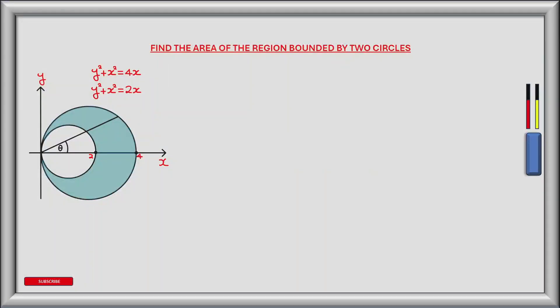In this exercise we have a region bounded by two circles shaded in blue, and we're going to find the area of the region using polar coordinates and double integrals. The outer circle has equation y squared plus x squared equals 4x and it cuts the x-axis at x equals 4. The inner circle has equation y squared plus x squared equals 2x and it cuts the x-axis at x equals 2. The x-axis is a line of symmetry for both circles, with half the circles above the x-axis and half below.